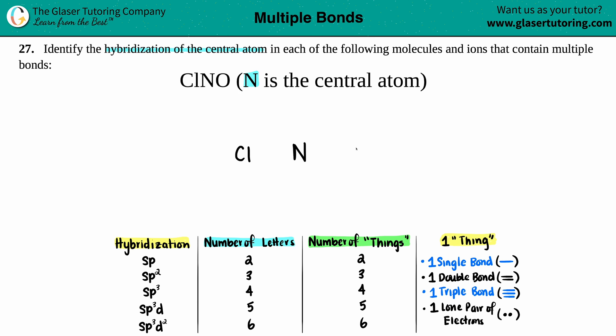Now let's draw the valence electrons. Chlorine is in group 7A or 17, so it's got seven valence electrons: one, two, three, four, five, six, seven.